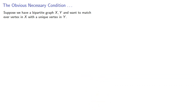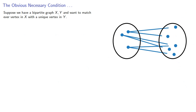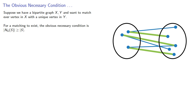Suppose we have a bipartite graph xy and want to match every vertex in x with a unique vertex in y. For a matching to exist, the obvious necessary condition is for the neighborhood of any subset to be bigger than the subset itself. But is it sufficient?